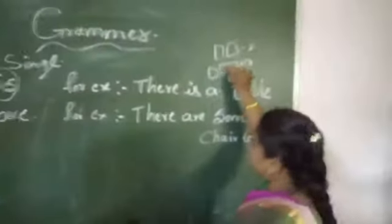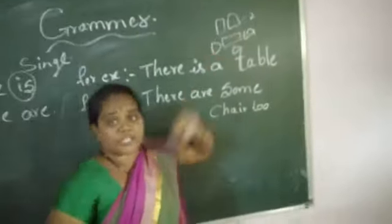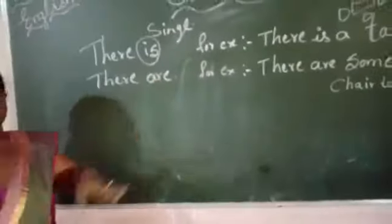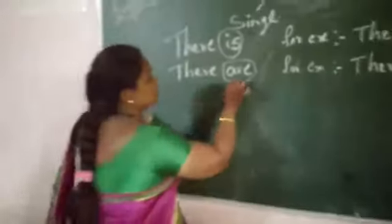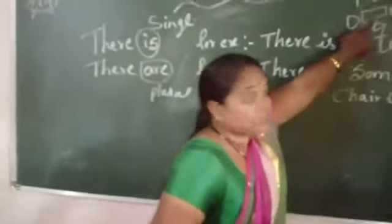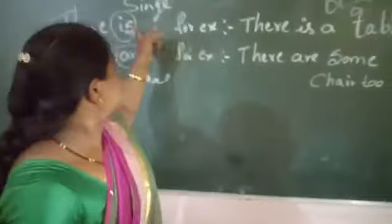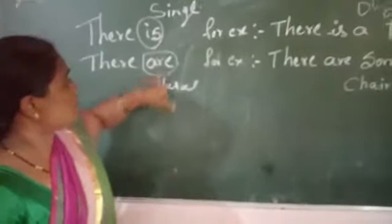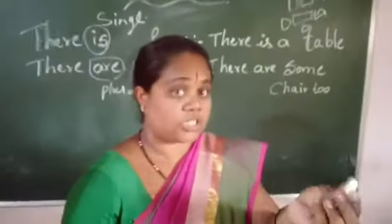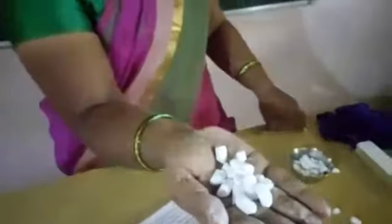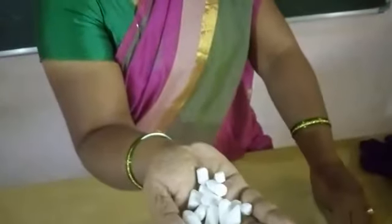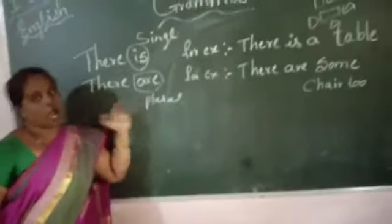One table — 'there is a table.' For plural items we use 'there are.' For example, 'there are some chairs.' See — when it is singular, we write 'is,' and when it is plural form, we write 'are.' For example, one single chopstick — we use 'is.' Many chopsticks — we use 'are.' There are many chopsticks here. Single uses 'is,' plural uses 'are.' Understand, children?